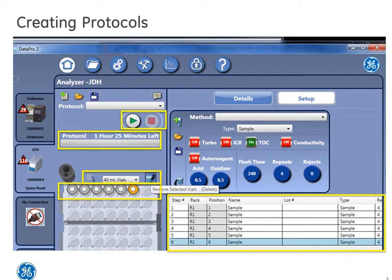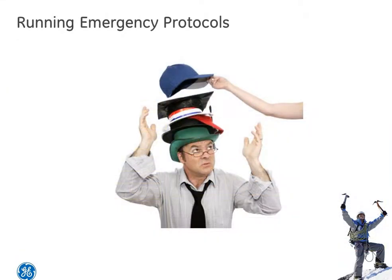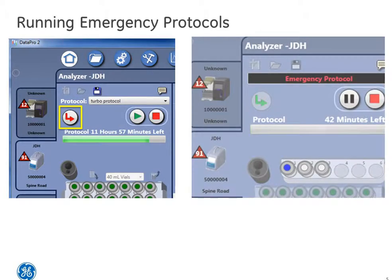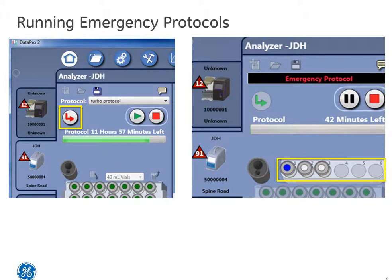But what if you have an emergency? You know those times when non-routine samples are dropped off and you have an 11-hour protocol running? That's not a problem for DataPro2. Emergency protocols can be accessed by clicking the red emergency protocol button. Then load your emergency vial rack and select the emergency icon again — it will switch to green and DataPro2 will indicate it is in emergency mode.